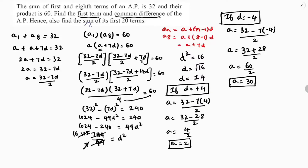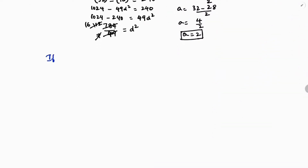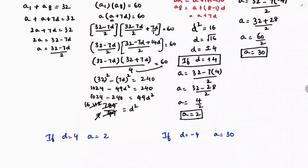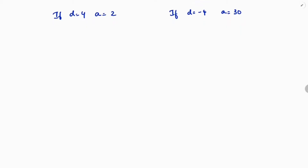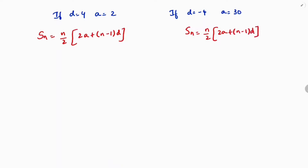Now we need to find the sum of the first 20 terms. The sum formula is Sₙ = n/2 × [2a + (n−1)d]. For Case 1, where a = 2 and d = 4: S₂₀ = 20/2 × [2×2 + (20−1)×4] = 10 × [4 + 19×4]. Now 19 × 4 = 76, so this is 10 × (4 + 76) = 10 × 80 = 800.